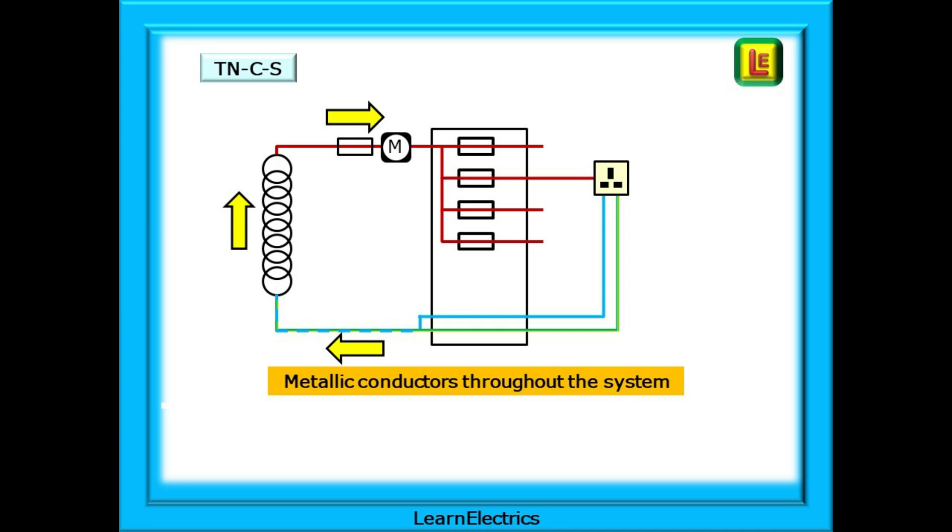The TNCS Earth Fault Path is similar to the earlier system. Fault current will flow along the Earth or CPC in the property, but at the consumer unit, it then flows along the combined cable back to the transformer. Through the transformer again, along the phase wire, through the fuses, and bang! The fuses blow, and make the installation safe. Just as before.